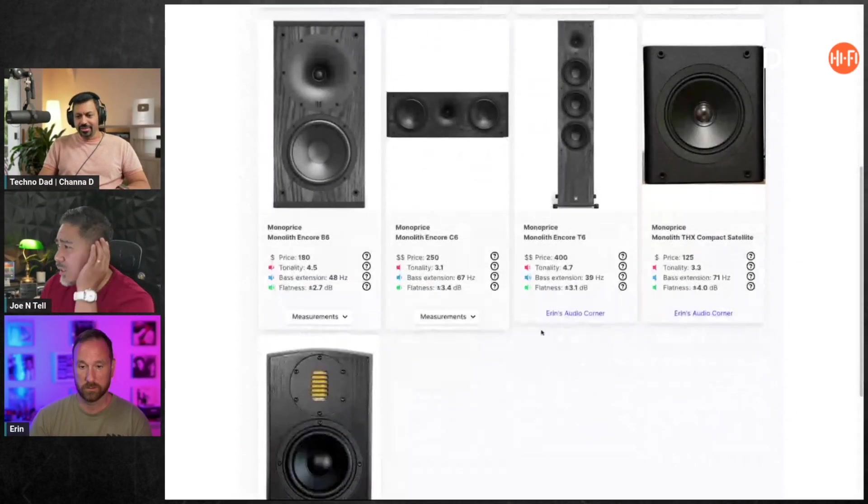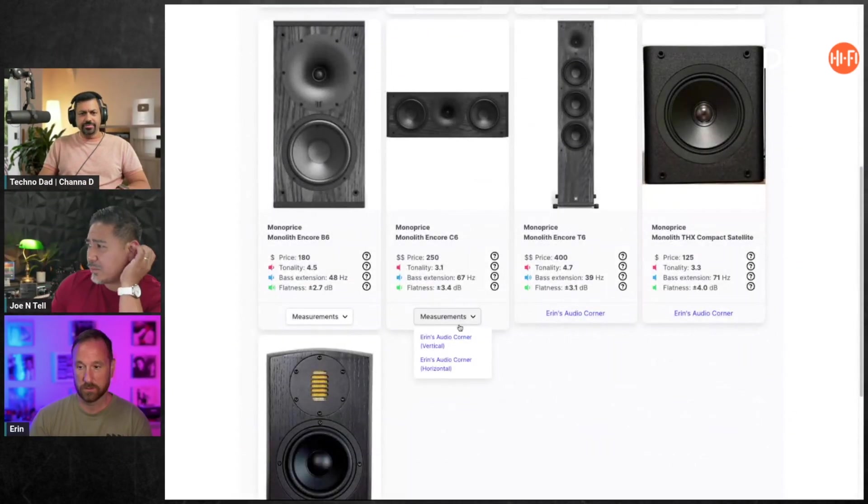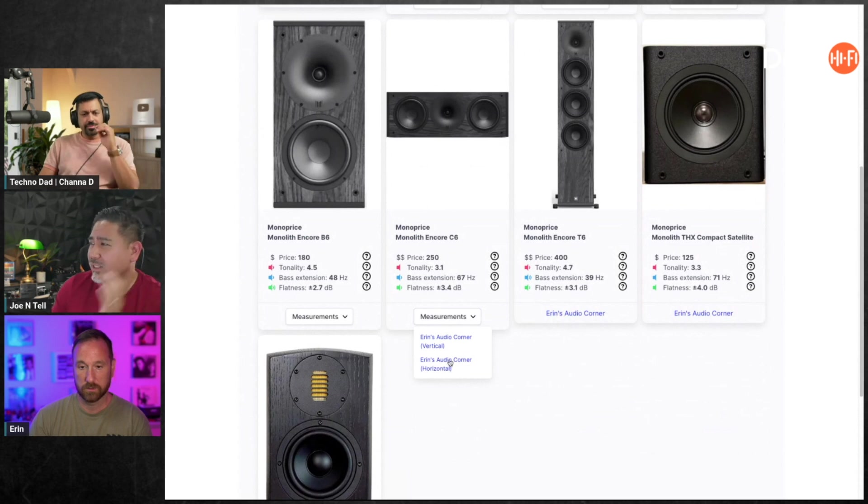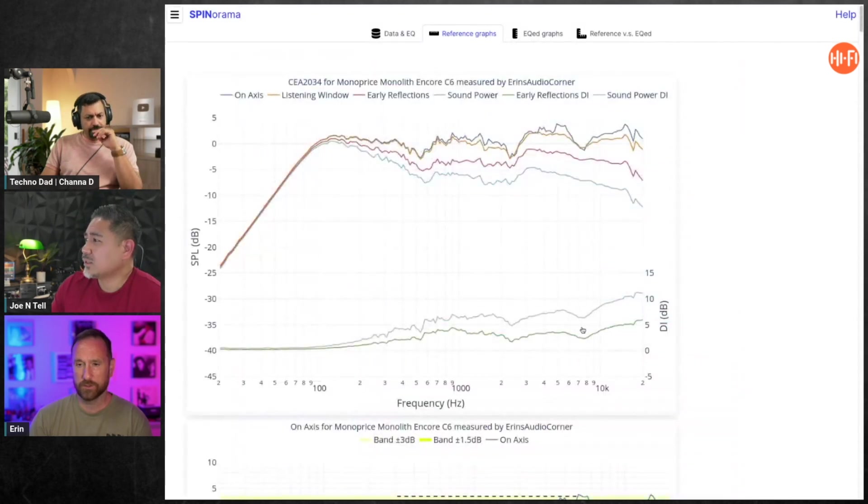Right, here I'll bring that one up too just so you guys can see. Hey Joe, I could do that for like my surrounds, couldn't I? Just get all surround and surround back. I should get this before they sell out because they've been selling out. $250.